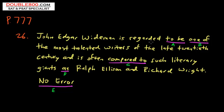Here we have 'is regarded to be one of the most talented writers' — 'one of the most,' he's a single person of the late 20th century. We know B is correct; there's nothing wrong with B. Then 'often compared to' — you see a verb and a preposition. You want to look out for the idiomatic.